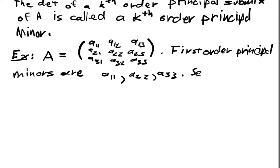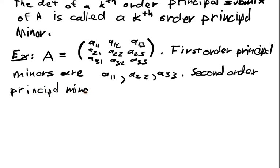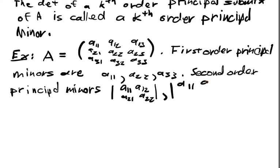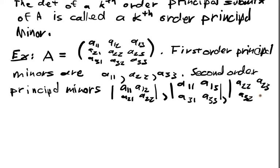The second order principal minors are obtained by deleting just one row and one column. There are exactly three of them: the determinant of A11, A12, A21, A22; the determinant of A11, A13, A31, A33; and the determinant of A22, A23, A32, A33. Those are all the second order principal minors.